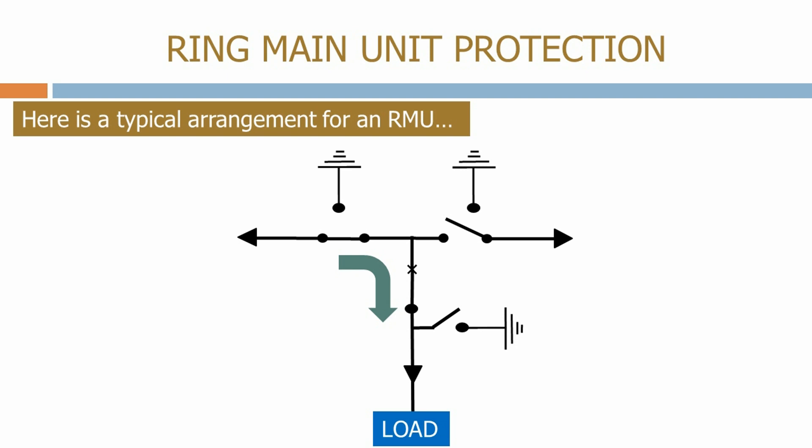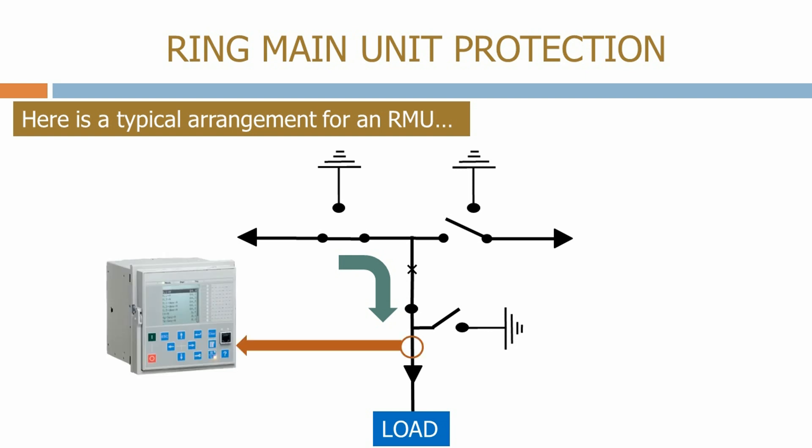Most RMUs normally have just one current transformer located on the feeder, which is then used to monitor the feeder current and provide the feeder with the overcurrent and ground fault protection that it requires. If a fault occurs on the feeder, the bay controller will trip the circuit breaker, removing the faulted feeder from the system.